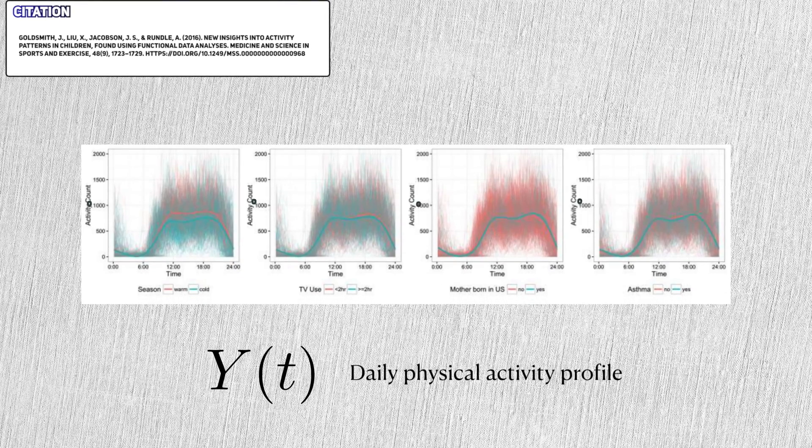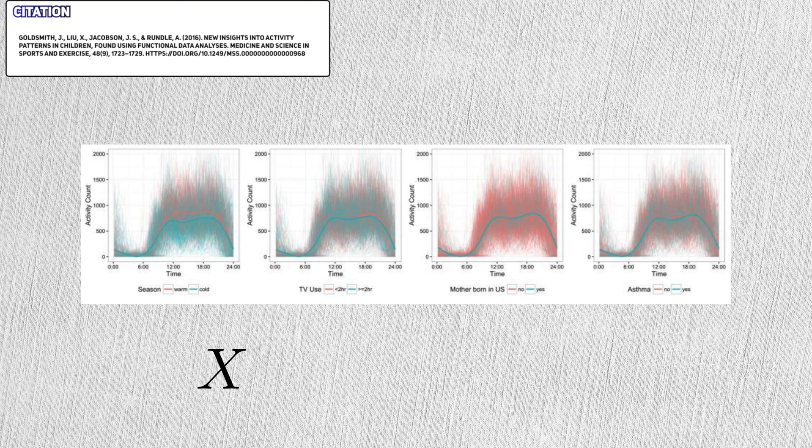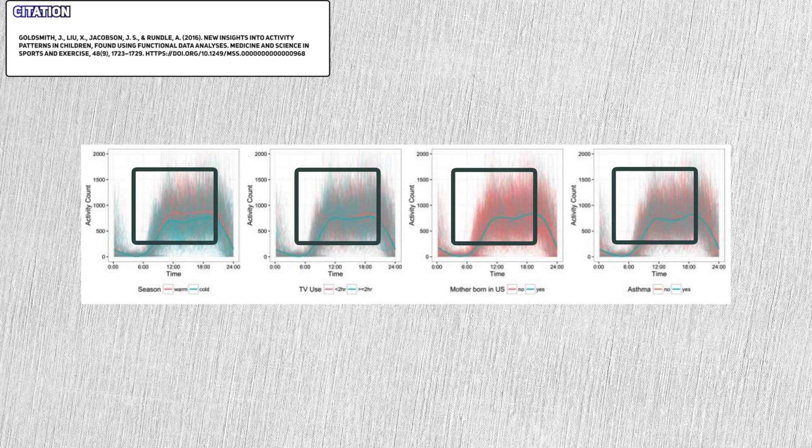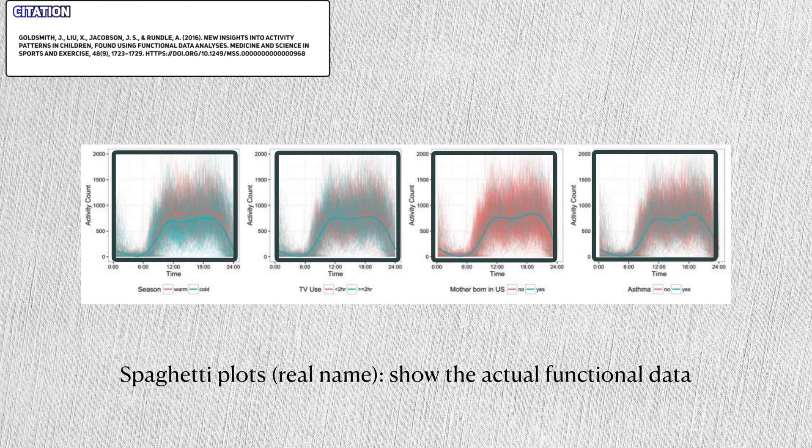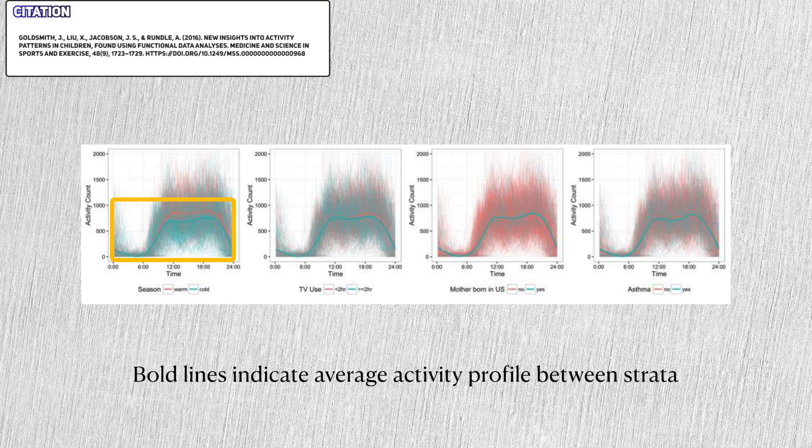In this study, the functional outcome is physical activity in a given day, and there are actually several predictors used in this study, including season, TV use, having an American mother, etc. These clouds represent the actual functional data collected, while the bold lines represent the averages stratified by different variables. We'll focus on cold seasons here.